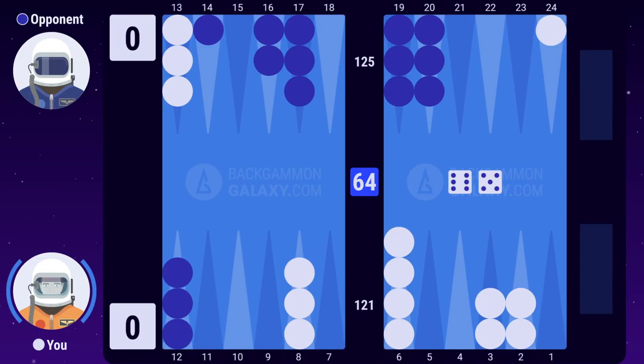Here's another example. After moving, you'll be leading the race by 15 pips. That's why you should use this great roll to escape your backmost checker.